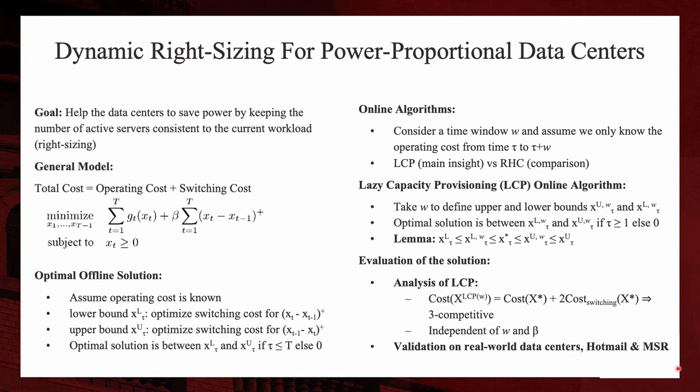So let's look at the LCP algorithm. The term lazy is used because it takes reference lazily from the structure of the optimal offline algorithm by staying lazily between two bounds, but moving forward in time. Similarly, the authors find the upper bounds and the lower bounds, and this time they take in the time window w. Also similarly, the authors get a range for the optimal solution for the online situation, which is bounded by the newer lower bounds and the upper bounds.